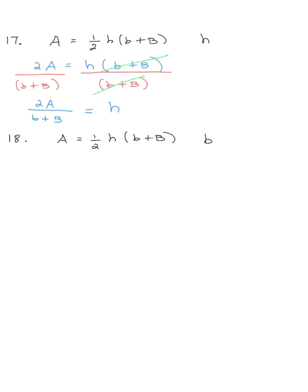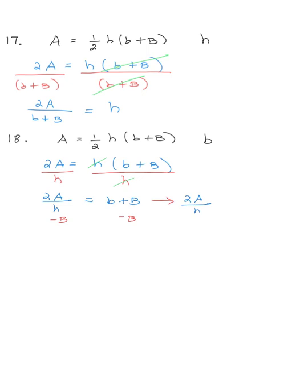For problem 18, we're now solving for lowercase b instead of h. I start the same way by multiplying both sides by 2: 2a equals h times b plus uppercase B. I want to get lowercase b by itself, so I'll divide both sides by h, canceling that common factor. On the left, 2a over h equals b plus uppercase B. Subtracting uppercase B from both sides — it doesn't combine with anything on the left — gives 2a over h minus uppercase B equals lowercase b.